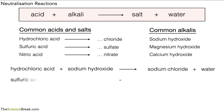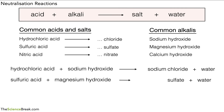Let's try one more. This is sulfuric acid with magnesium hydroxide. With sulfuric acid we're going to get a sulfate salt, so it will be something sulfate plus water. We then look at our alkali — the metal in the alkali appears in the salt — so we have magnesium sulfate plus water.